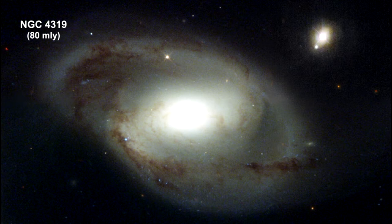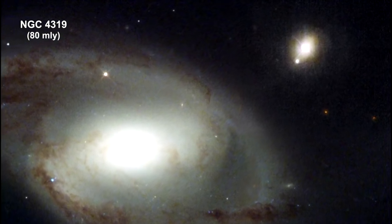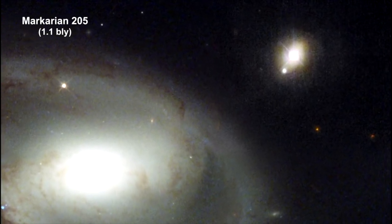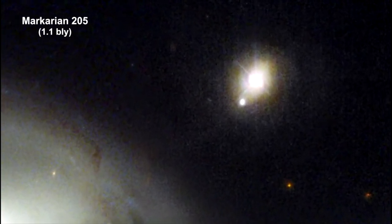You might recognize NGC 4319. It is a galaxy in the Virgo supercluster. Of interest now is the small light at the upper right. It is the quasar called Mercurian 205. It is 1.1 billion light-years away.